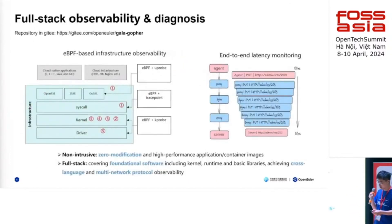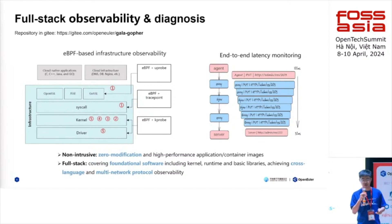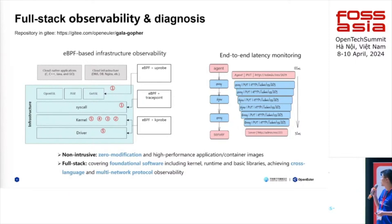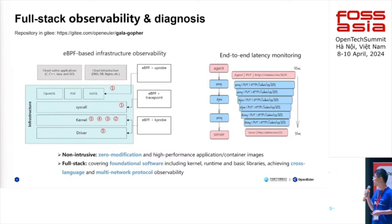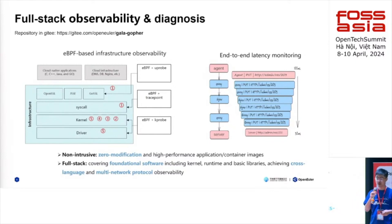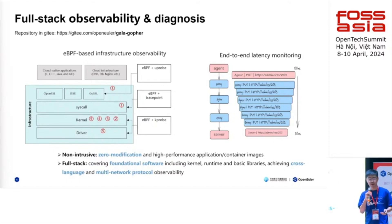Here I'm going to introduce the three main features. Firstly, it's full stack observability. It is provided by Galagolfer, which is a daemon that provides a lot of eBPF-based probes, combined with u-probe, trace point, and k-probe to collect data from the kernel, driver, and syscall. It's very convenient for users to develop their own plugins. Right now we have covered the kernel runtime and some user mode software like Redis and Nginx.